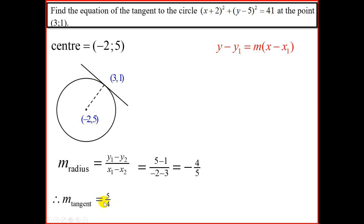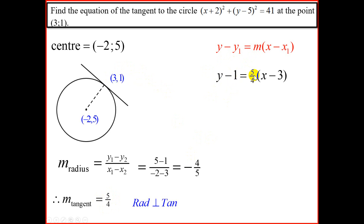We substitute the gradient of the tangent, 5 over 4, and the point (3, 1) into the equation of a straight line: y minus 1 equals 5 over 4 times x minus 3. Multiplying 5 over 4 into the bracket and moving the negative 1 to the other side, we end up with y equals 5 over 4 x minus 11 over 4, which is the equation of the tangent.